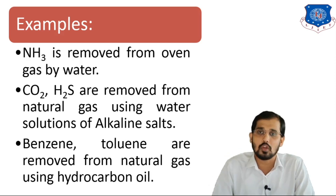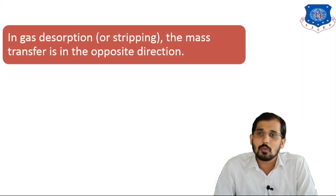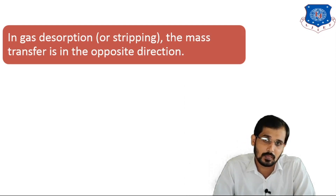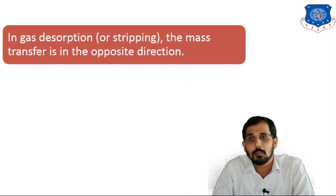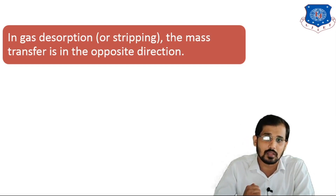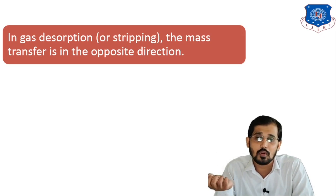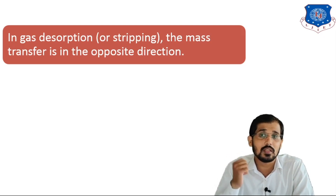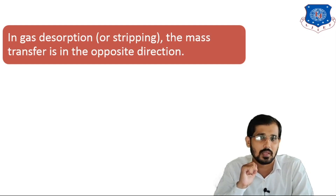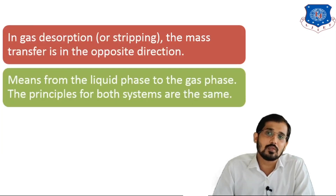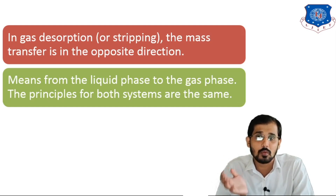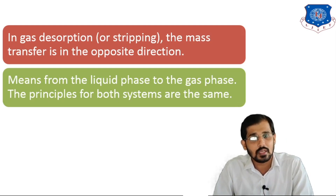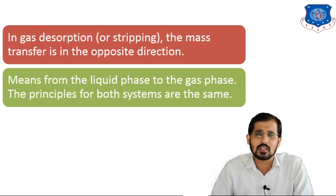Desorption, also known as stripping, is the opposite of gas absorption. If you want to remove whatever has been absorbed into the liquid — to purify the liquid for industrial purposes — you use gas desorption or stripping. In desorption, mass is transferred from the liquid phase to the gaseous phase, whereas in gas absorption, mass is transferred from the gaseous phase to the liquid phase. Both phenomena are interphase mass transfer, and the underlying principle for gas absorption and desorption is the same.